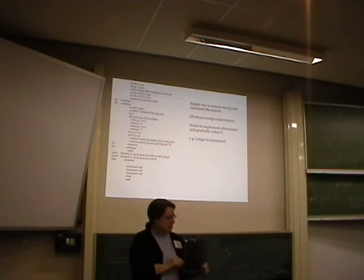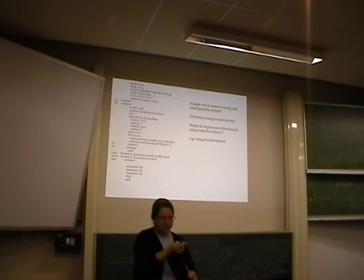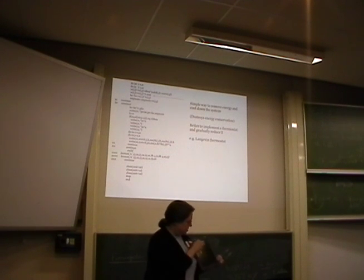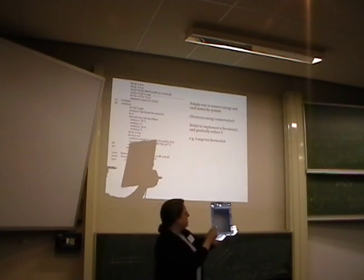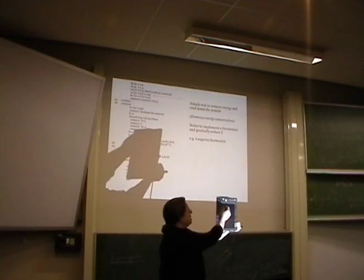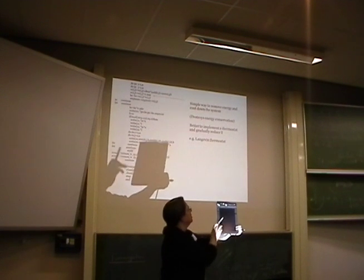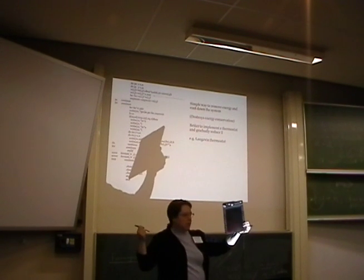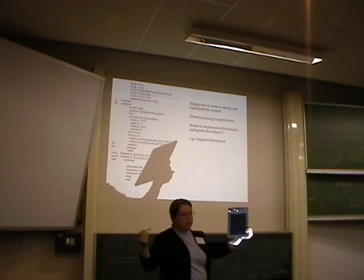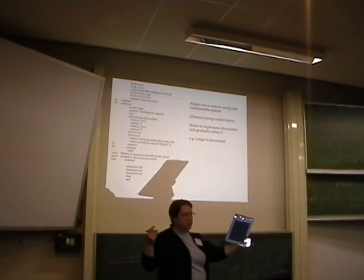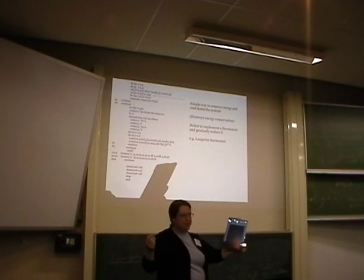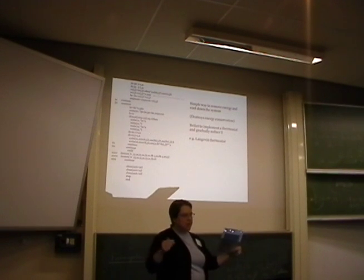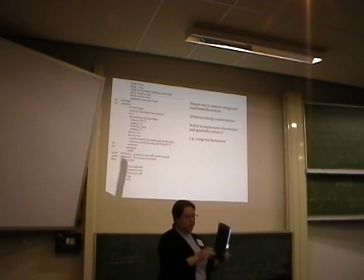The boogie board comes in several different models. If you push this button it erases, and then you can draw on it and push the button to erase. So it's just like a whiteboard — draw, erase. The cheapest version is about $30 or $35. They make nice presents for young children who waste a lot of paper drawing. This is the slightly more advanced version that plugs into a USB drive.